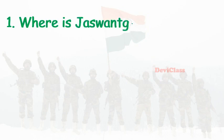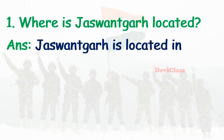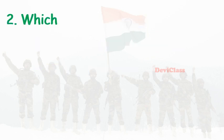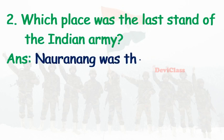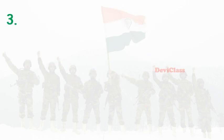Where is Jaswant Kaur located? Answer: Jaswant Kaur is located in Arunachal Pradesh. Second question: which place was the last stand of the Indian Army? Answer: Navranang was the last stand of the Indian Army. Third question: when did the battle of Navranang start?